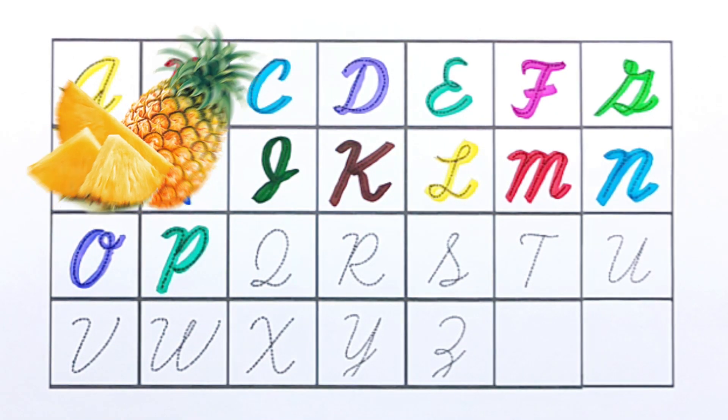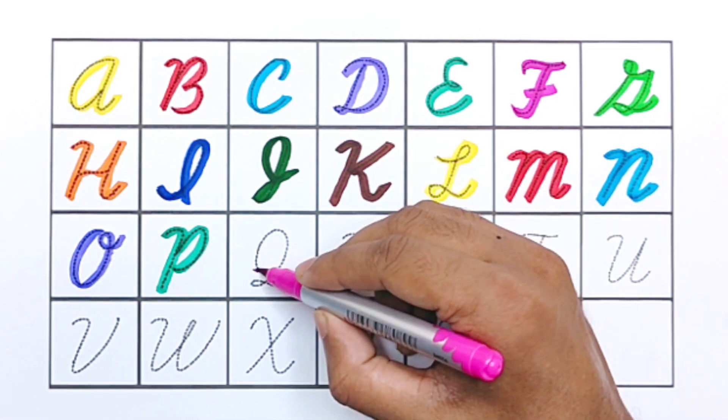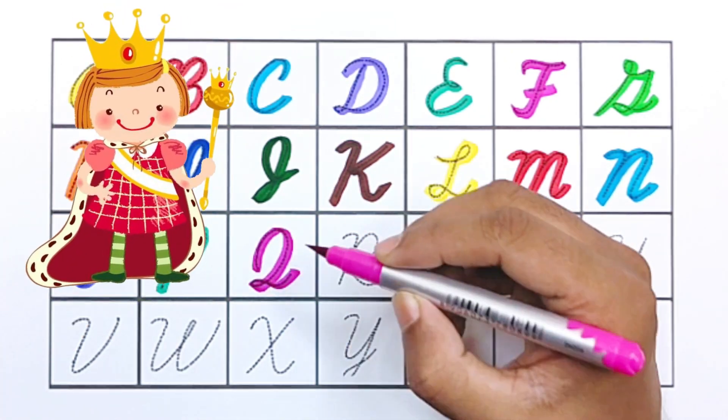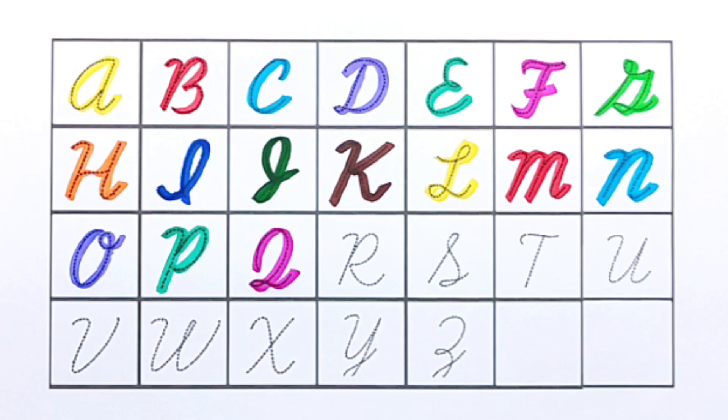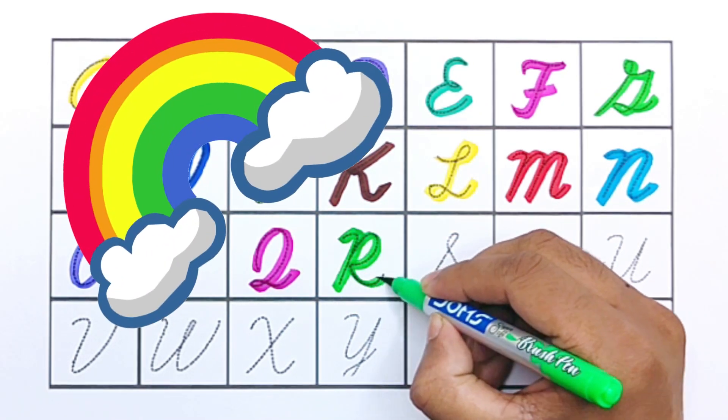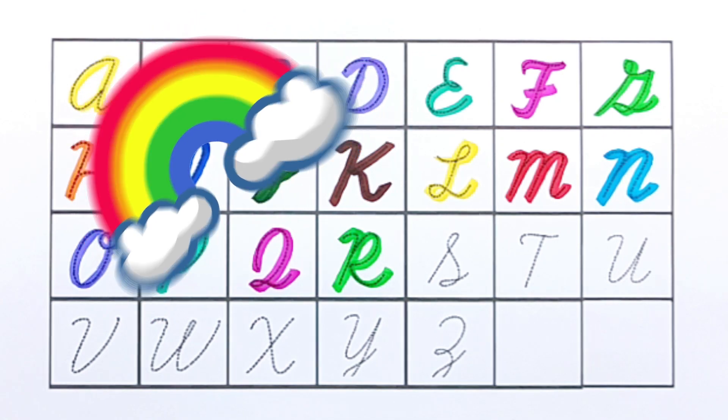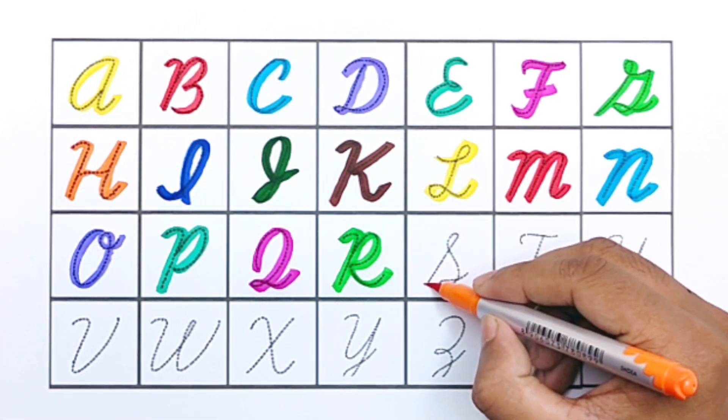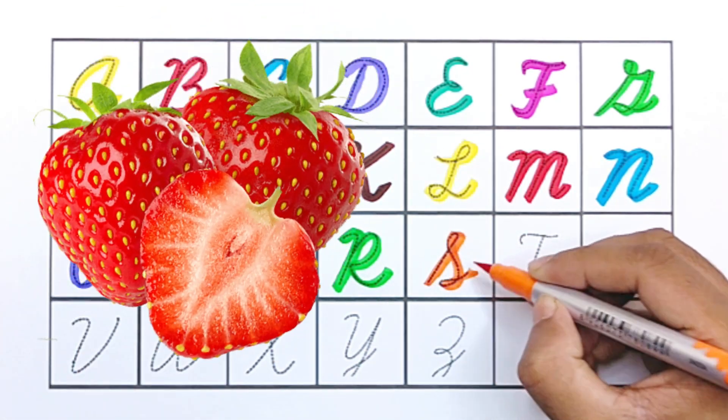Pink color Q, Q for queen. Light green color R, R for rainbow. Orange color S, S for strawberry.